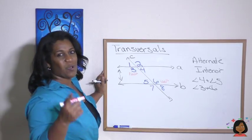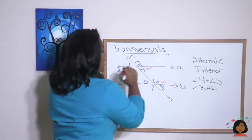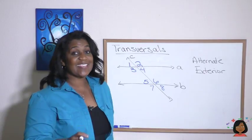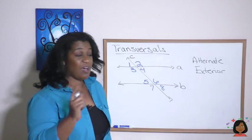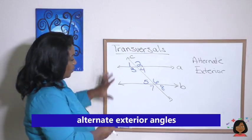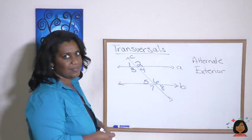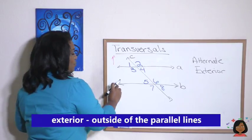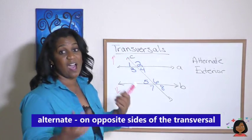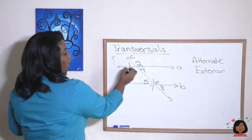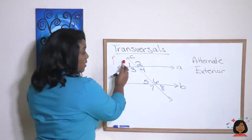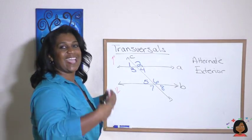If angle 4 is 60 degrees, that tells us angle 5 is also 60 degrees. Now let's talk about alternate exterior angles. Exterior refers to angles on the outside of the parallel lines, and alternate still means on opposite sides of the transversal. Starting with angle 1, the alternate exterior angle on the other side and outside the parallel lines is angle 8 — so angles 1 and 8 are alternate exterior angles.